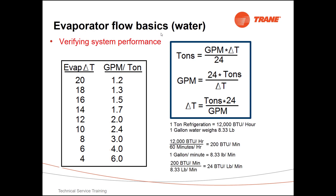So for our evaporator flow basics, we're concerning water here — we're not talking about glycol — but the delta T that you will get from your evaporator is actually in correlation to how many gallons per minute per ton that you have flowing through your machine.